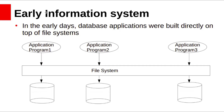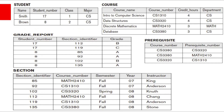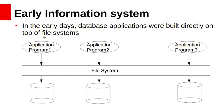Let's see what is the purpose of database systems. In early days, around the 1960s, one way to keep information on a computer was to store it in operating system files. For example, if we take university data to maintain information about all students, courses, and grade reports, that information was stored in files. To allow users to manipulate information, the early information system had a number of application programs that manipulated the files using the file system.